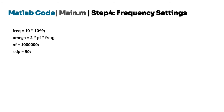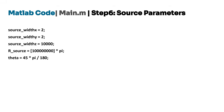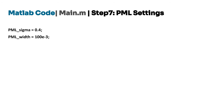Step 5 specifies the relative permittivity EPSR, the velocity of the object, and the initial viewing angle for visualization. Step 6 defines source parameters including its dimensions (source_widthx, source_widthy, source_widthz) and distance r_source, essential for generating electromagnetic waves. Step 7 sets up the Perfectly Matched Layer (PML) boundary condition, defining its conductivity PML_sigma and its width PML_width to absorb outgoing waves and prevent reflections. Step 8 defines the total simulation time, the incident time, and other variables for controlling the simulation.